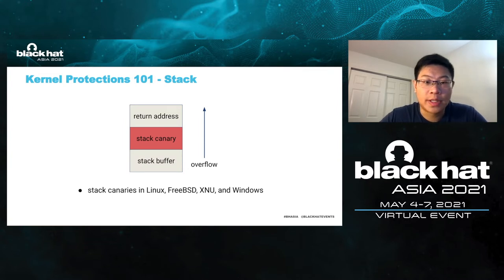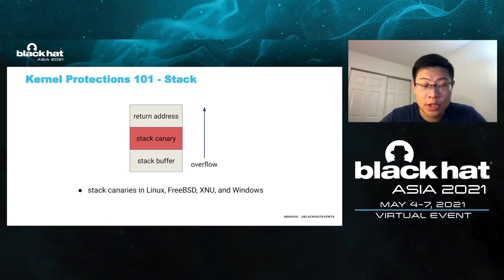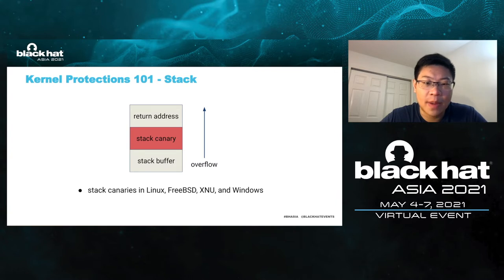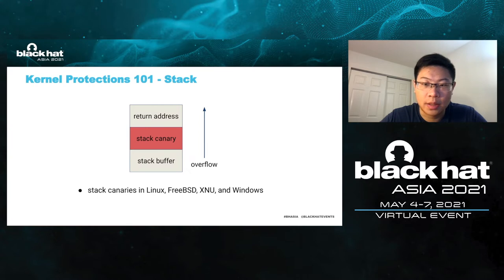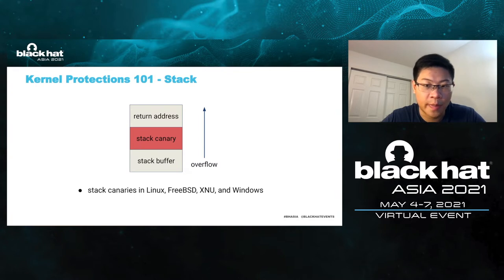First things first, I will describe several kernel protections that we plan to bypass. The first protection is stack canary, which is a pretty standard protection in Linux, FreeBSD, XNU, and Windows kernel. The idea is quite simple: when having a stack buffer overflow, the adversary can overwrite the return address in the current stack frame. When the function returns, the kernel execution is directed to the malicious address.